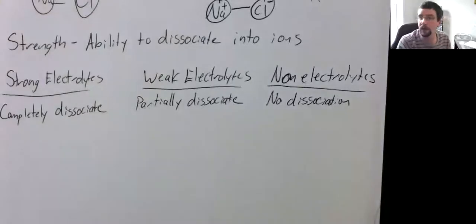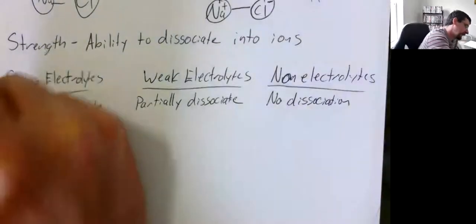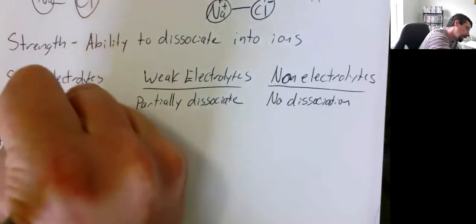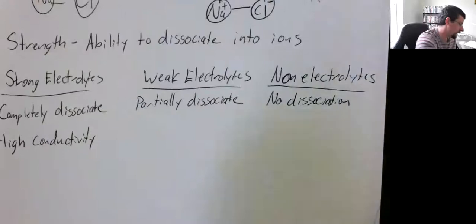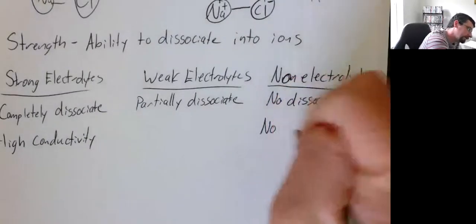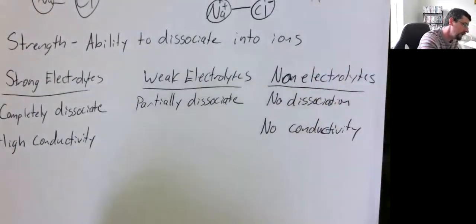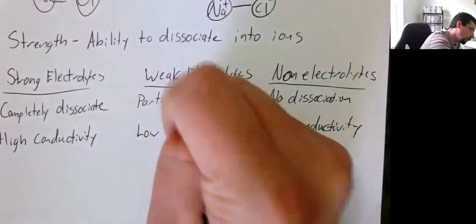What about their conductivity? Most of the time, when you have a lot of ions in solution, electricity can permeate throughout that media. A strong electrolyte would have high conductivity, a non-electrolyte would have no conductivity, and a weak electrolyte would have low conductivity or low conductance.